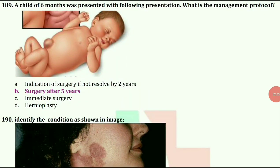A child of 6 months was presented with following presentation. What is the management of the condition? The answer is surgery after 5 years.